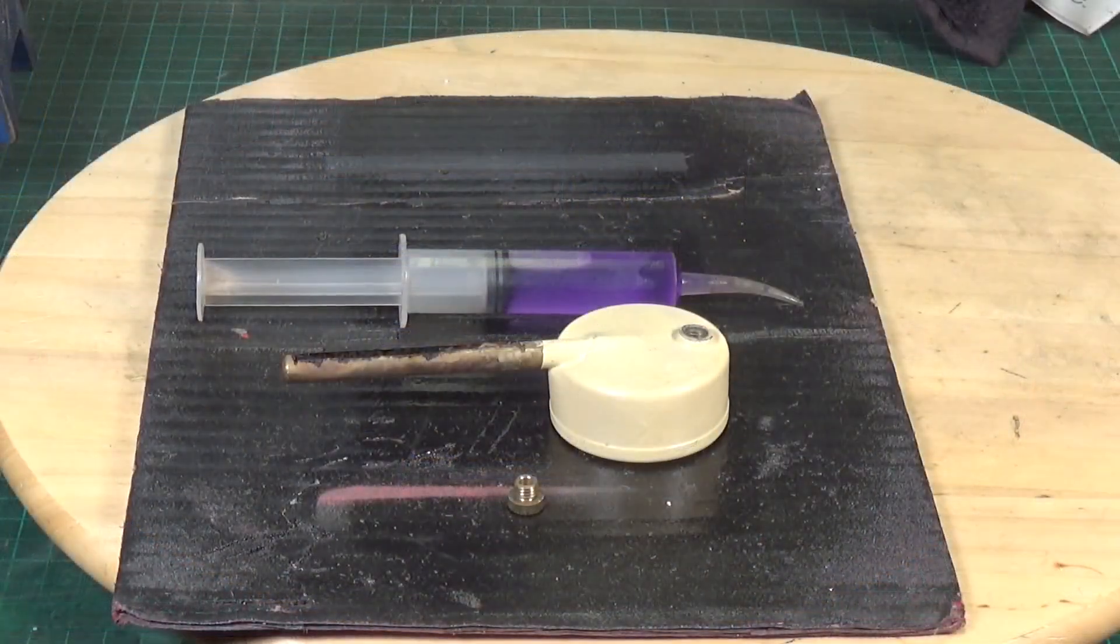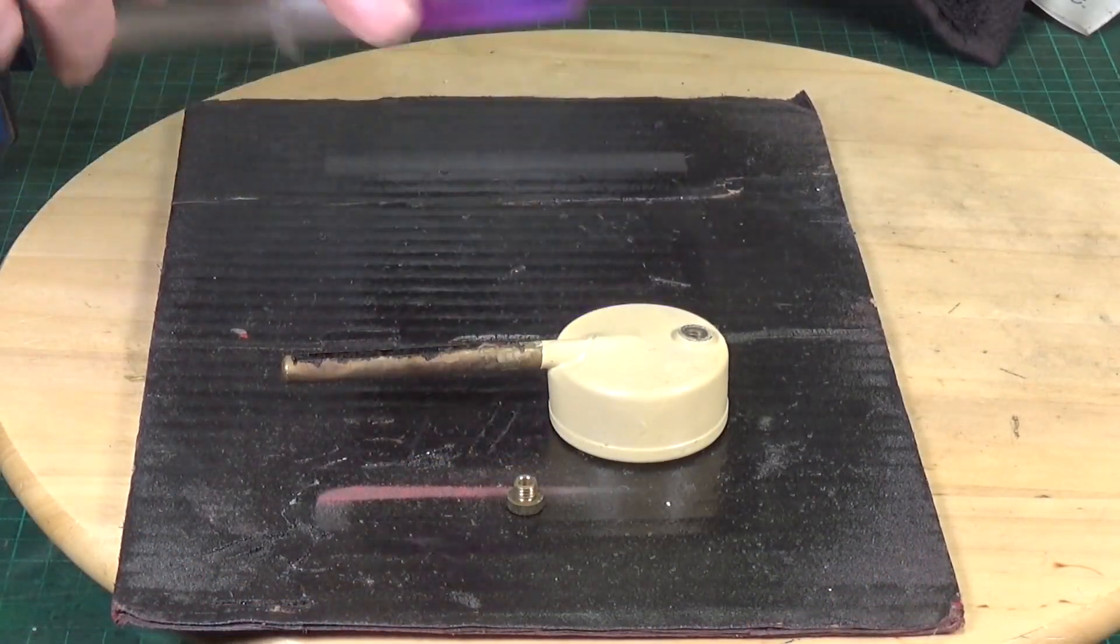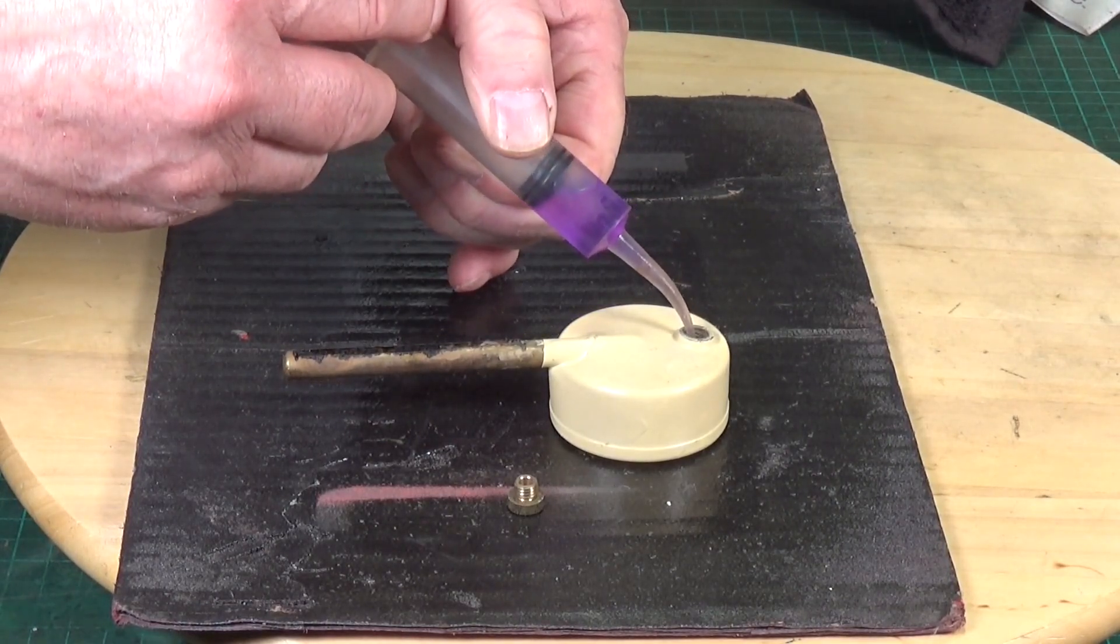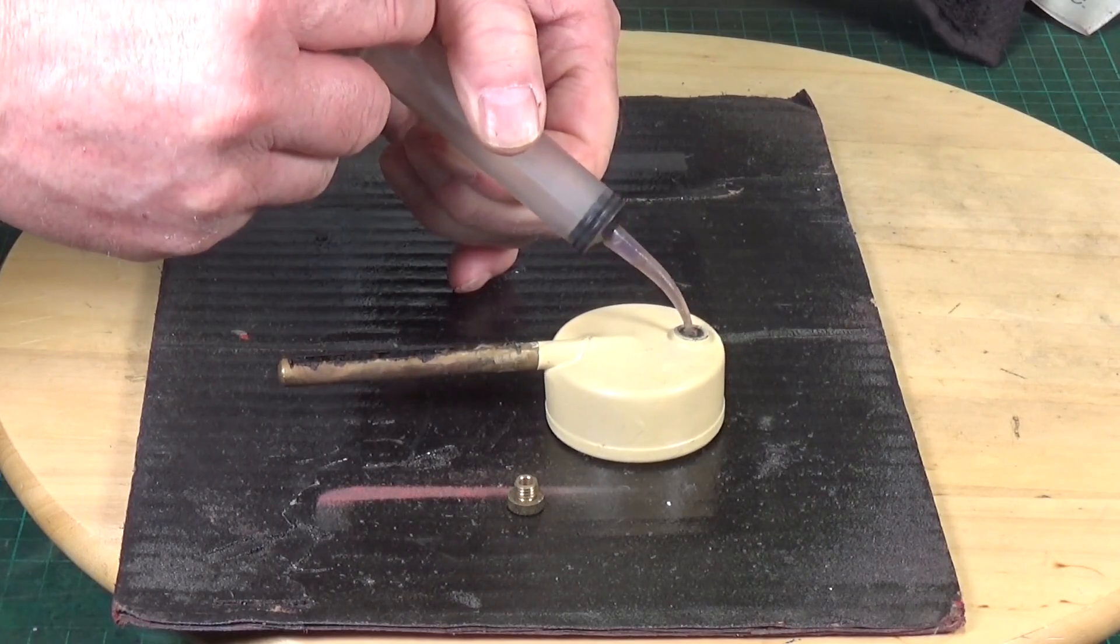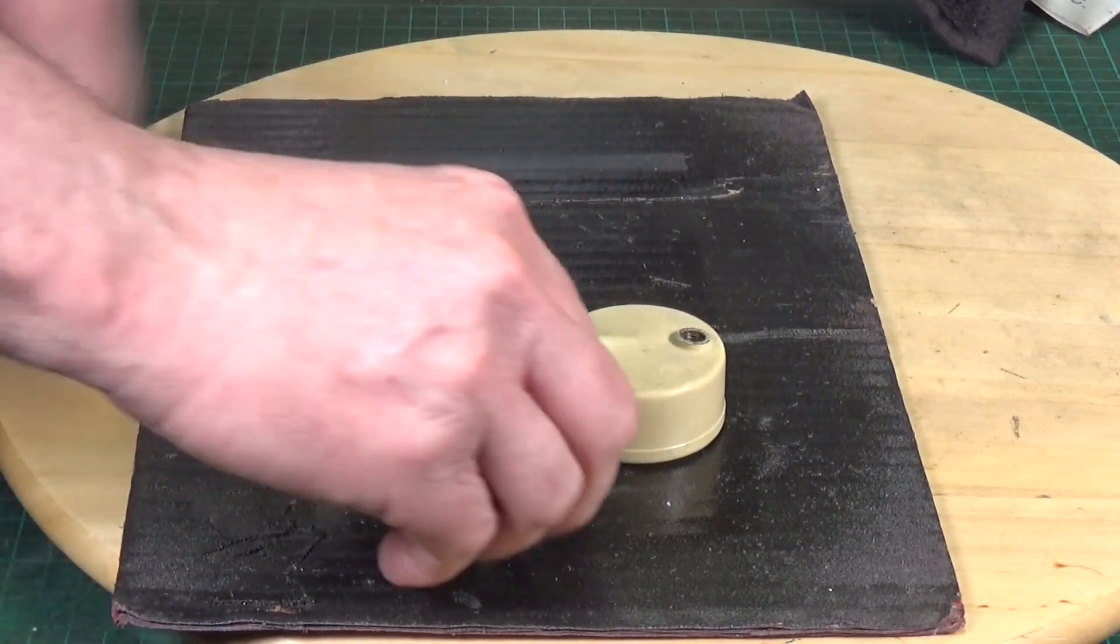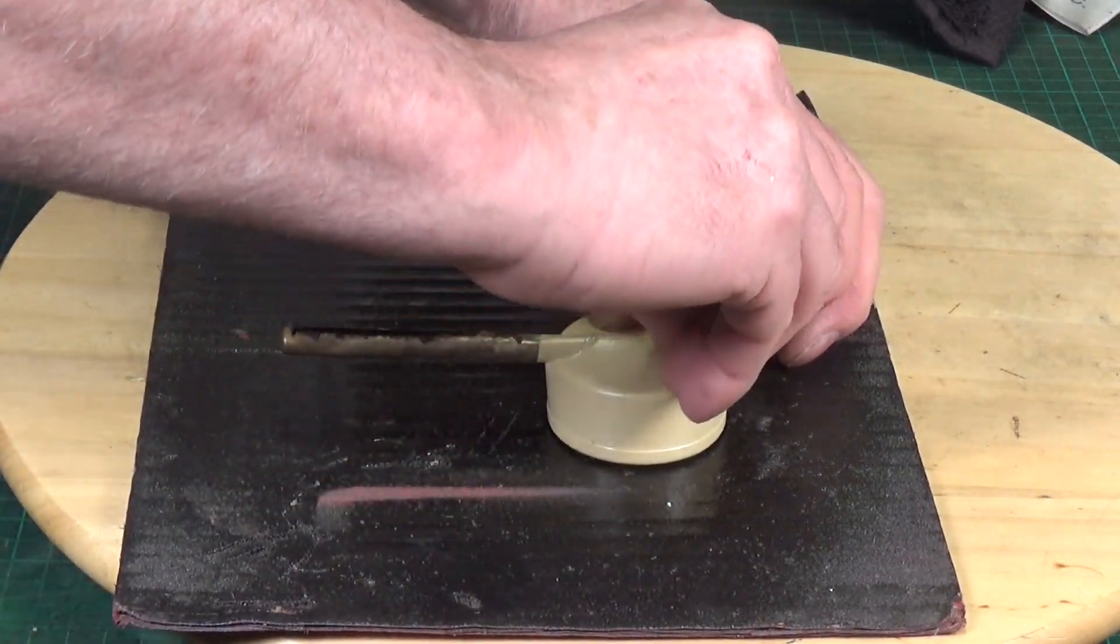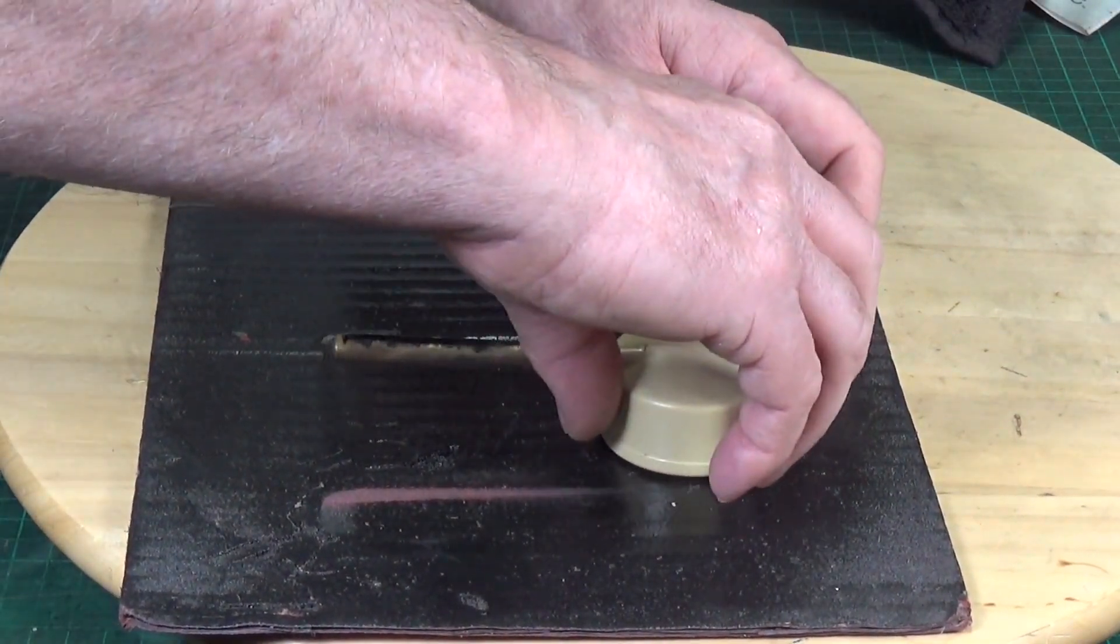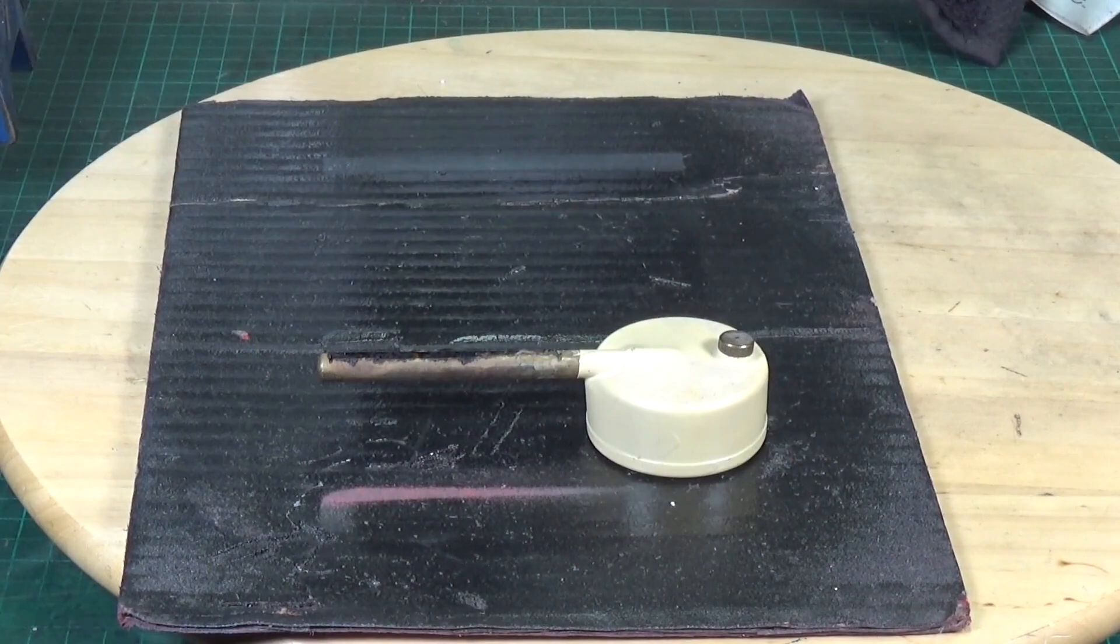Filling these exactly the same process as the Mamod ones. You just take the bung out, preferably using a syringe. It's just easier to do it this way. And in goes your meth. And there you go. So let's get this baby alight.